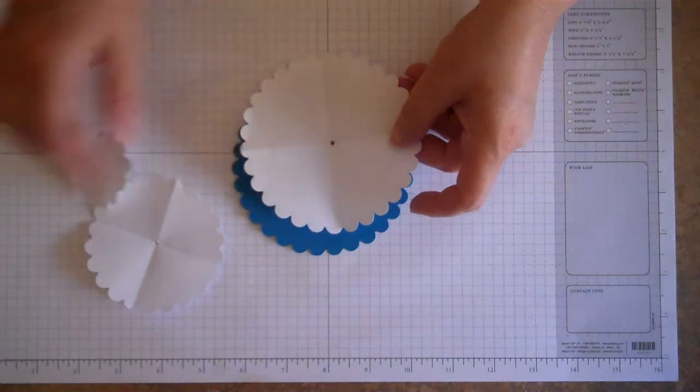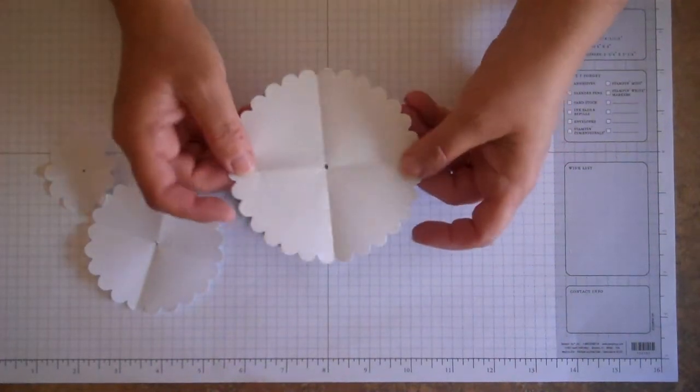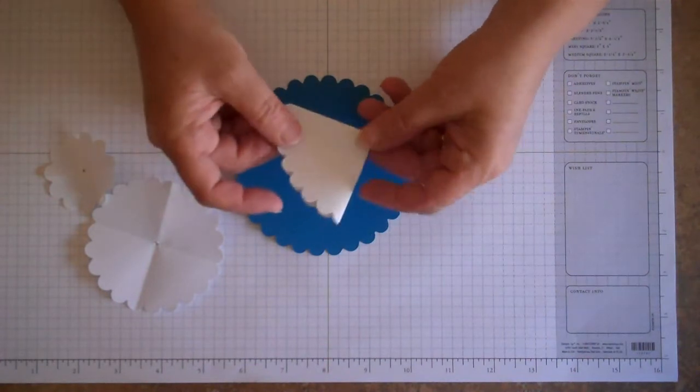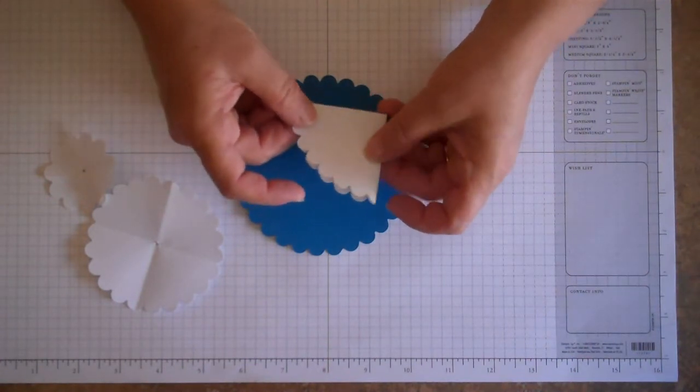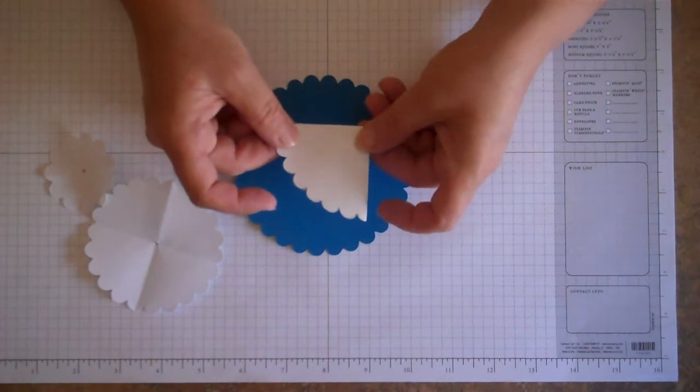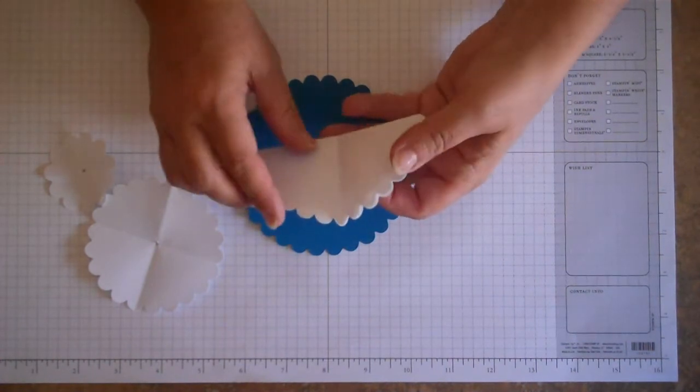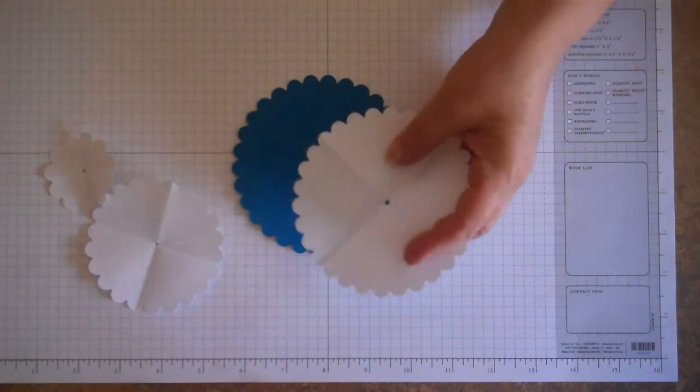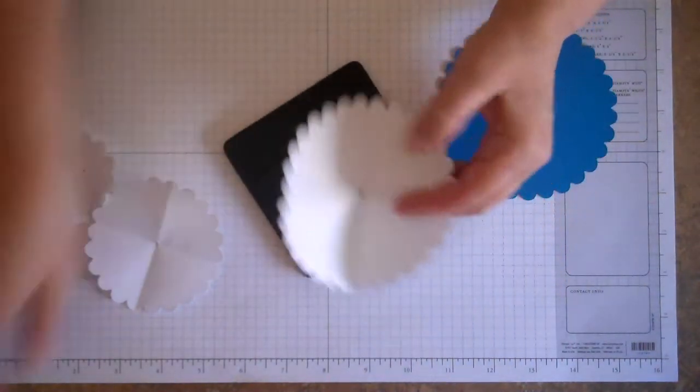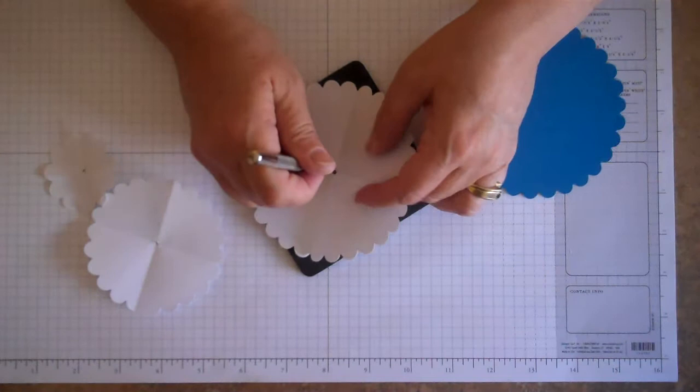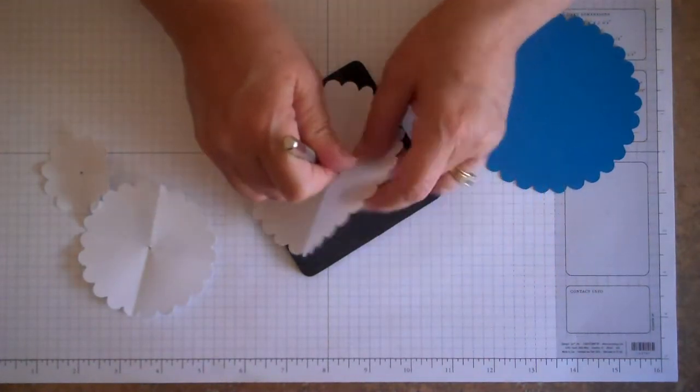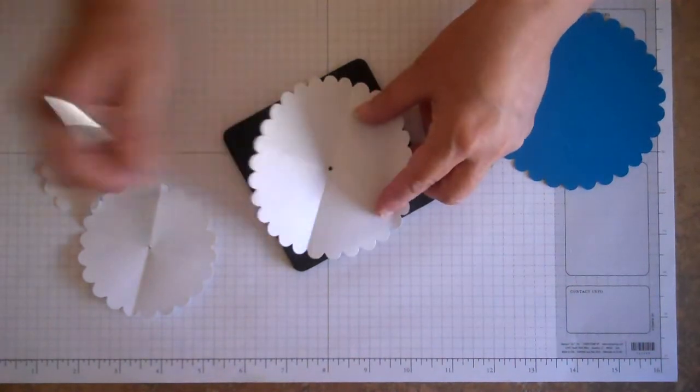Then what you're going to do is find the center. The way you find the center is basically just fold your image in half, and you can do this with a circle or a scallop or pretty much whatever you have. You're going to take your mat pack and your piercing tool and just punch a hole right in the center. You'll see where the center is where those four lines meet. Just go ahead and punch a nice big hole there.